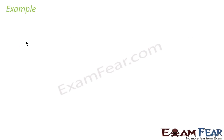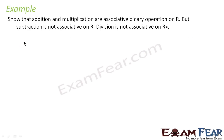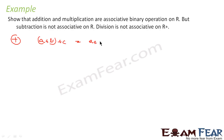Let's take some examples. We have to show that addition and multiplication are associative operations, but subtraction is not associative, and division is also not associative on R* — that is, non-zero real numbers. For addition, we know that (A+B)+C is always equal to A+(B+C), so addition is associative.